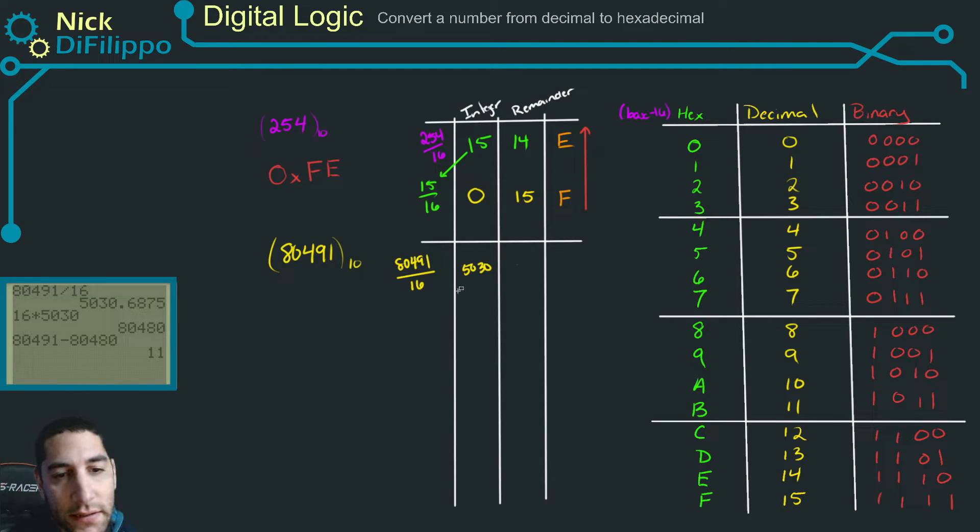So my integer value is 5,030. My remainder is 11. Now, the first thing I do is I look at 11 and I match up 11 to decimal, decimal 11 to hex. And I get that this value right here is a B.